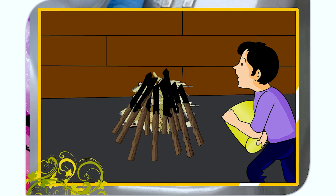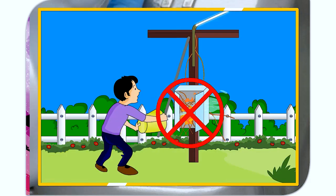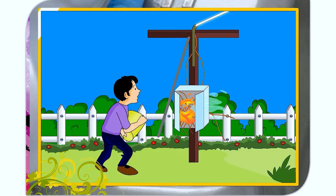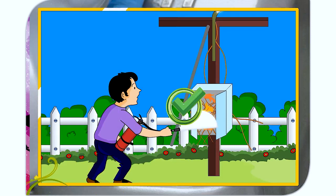Water should not be used to put off a fire caused by electricity. This is because water is a good conductor of electricity and it can give an electric shock to the person putting off the fire.